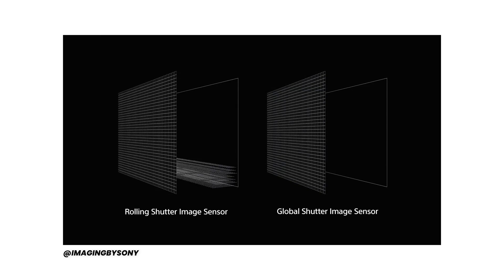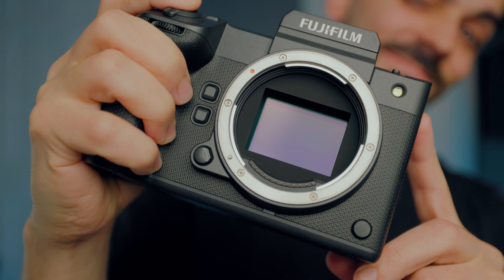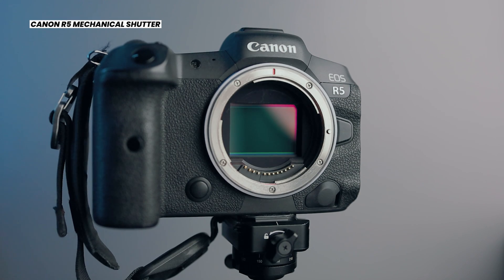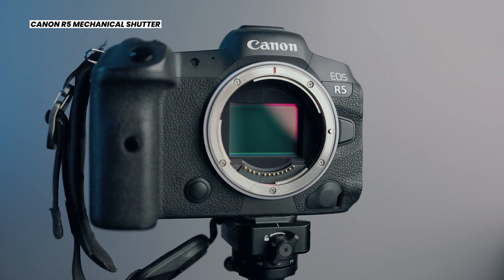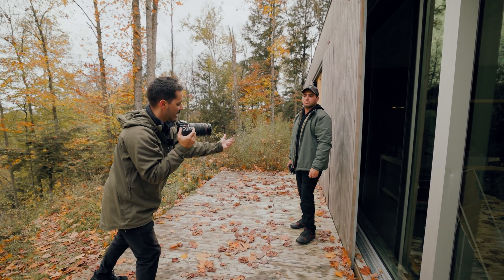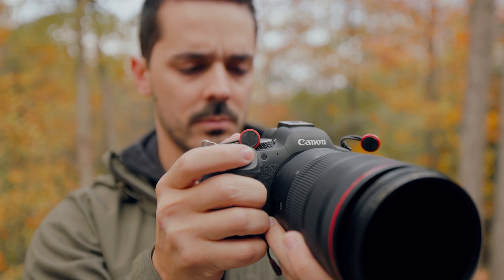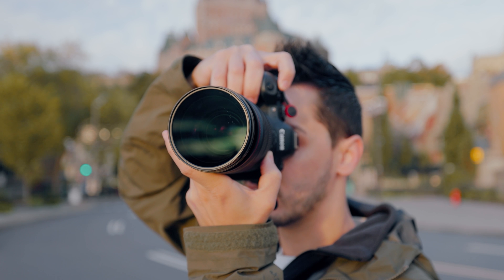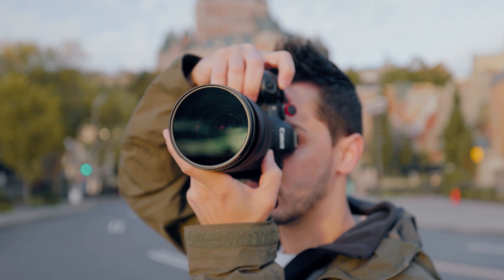The idea is that eventually global shutters will completely eliminate the need for a mechanical shutter, making cameras more durable and potentially less expensive. Mechanical shutters are extremely fragile and are often the first component inside a camera to break and need replacing. So while global shutters might be a niche feature inside high-end sports or cinema cameras right now, don't be surprised if in a few years every camera being sold has a global shutter.